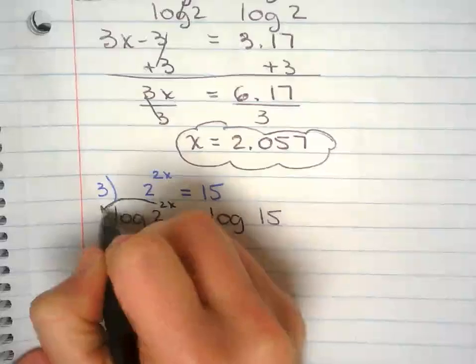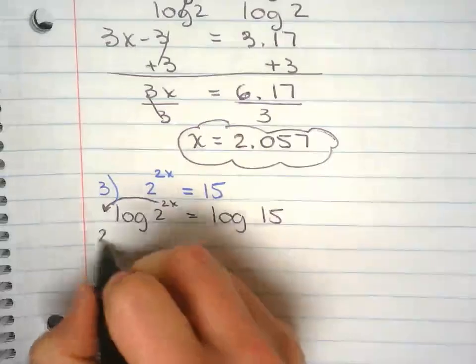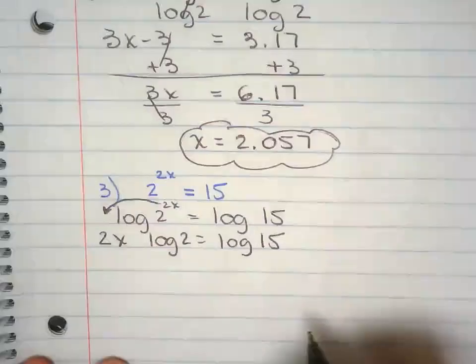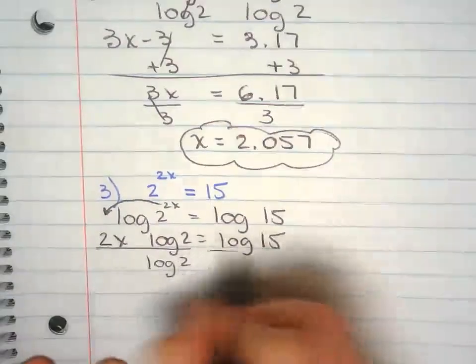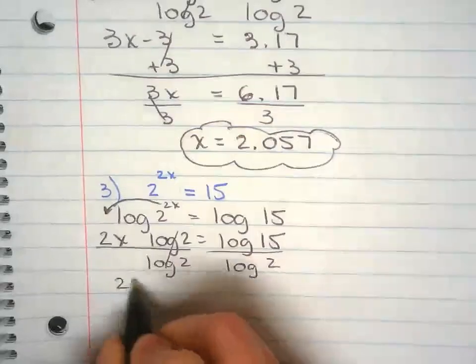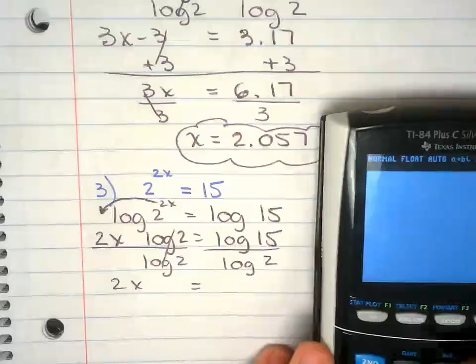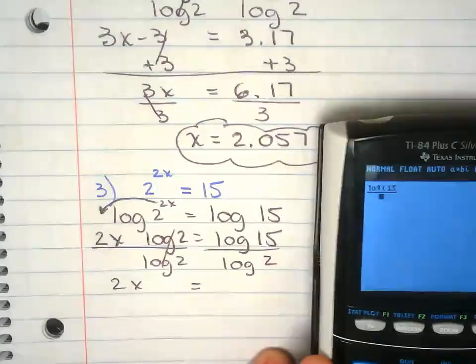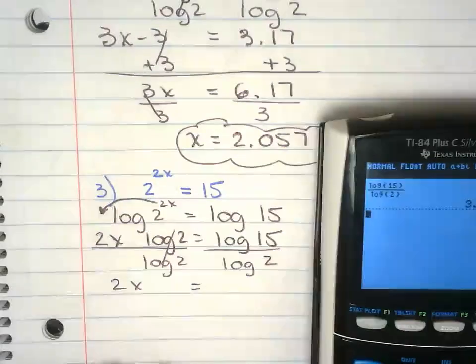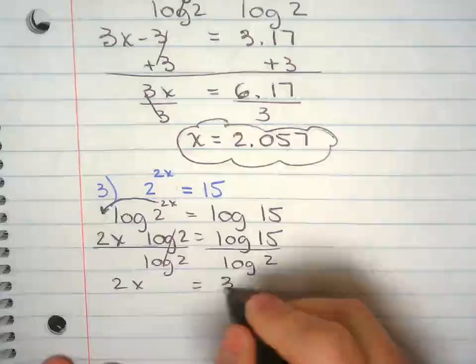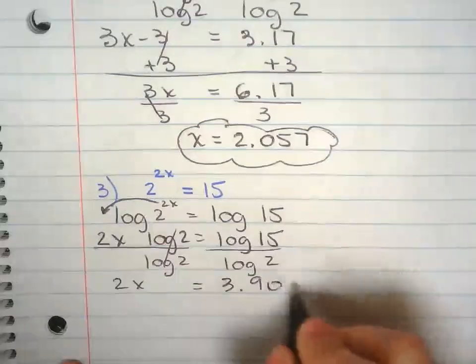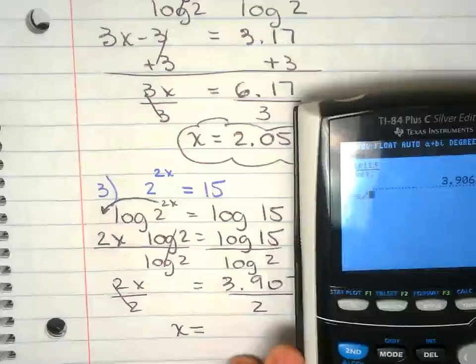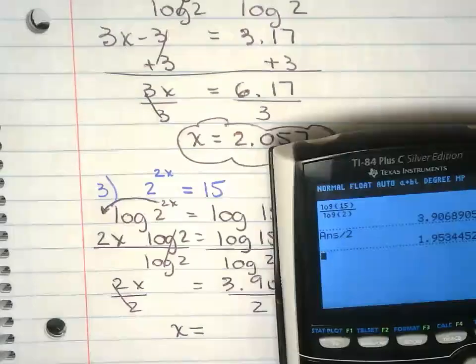The power property goes to the front multiplying everybody. Divide both sides by log of 2. Keeping three decimals, divide by 2. 1.953.